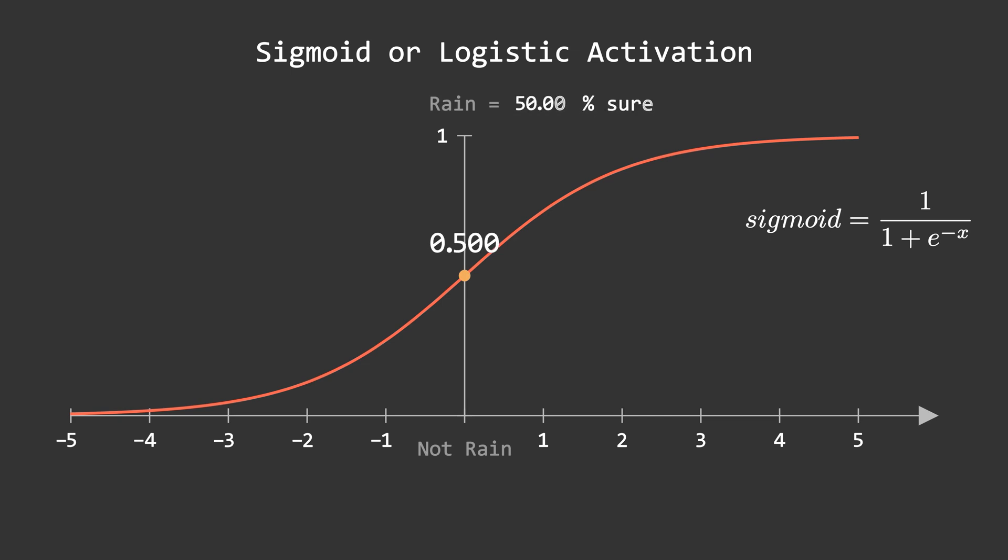Then our sigmoid can tell the probability of raining. Assume this dot is prediction of our model. Currently, it is on 0.5, which means the model is 50% sure that it will rain. So that point can be anywhere between 0 to 1, and that's how it can tell the probability of rain.